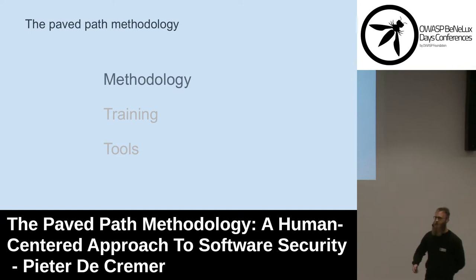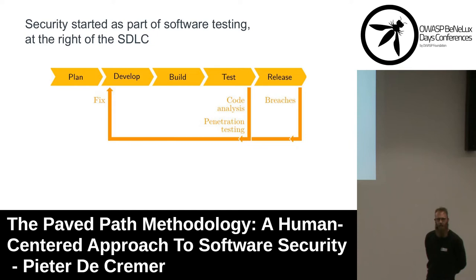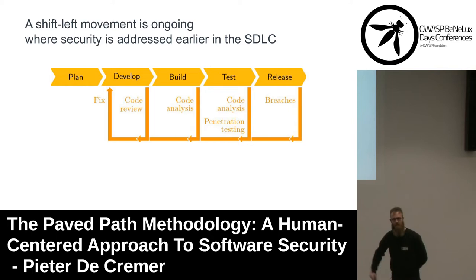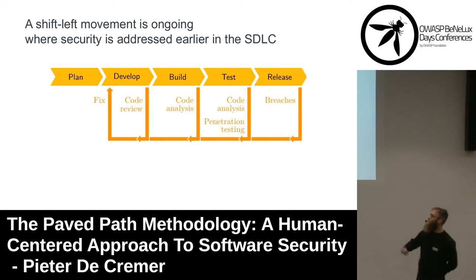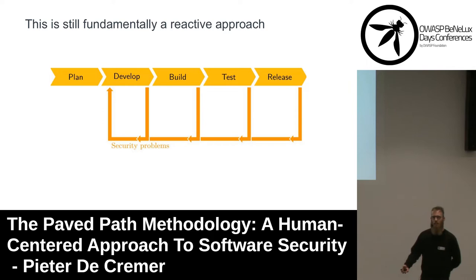Software security started as part of software testing. Historically, it was done at the right — or the end — of the software development lifecycle. However, because of the increased speed of development with Agile and DevOps methodologies, and also because security professionals are understaffed, with only one security professional being hired on average for up to 200 developers, a shift-left movement is ongoing where security is addressed earlier in the software development lifecycle. In this movement, developers are made responsible for the security of their own code, and they are too often handed repurposed training and tools intended for security professionals.